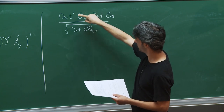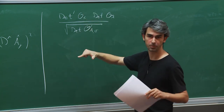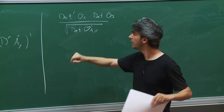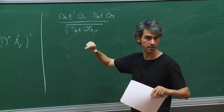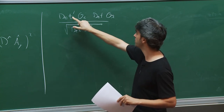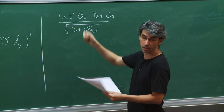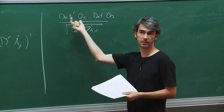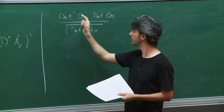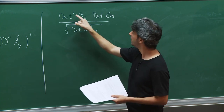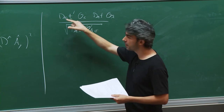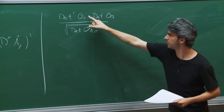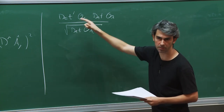These constant gauge transformation zero modes are an issue only on compact spaces — in flat space you usually set gauge transformations to zero at infinity, but here we are on a compact space. We know we have to divide by them, so we can just remove these zero modes. Since we understand where they come from, we simply remove them without introducing ghosts for ghosts.